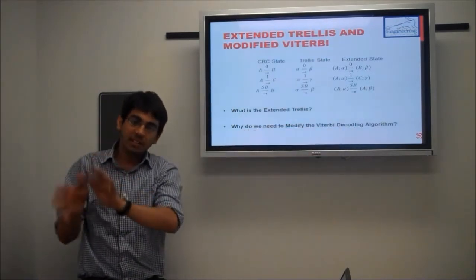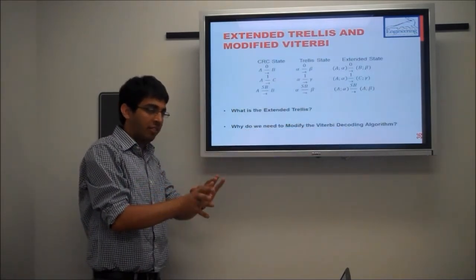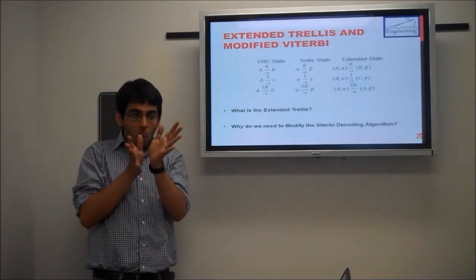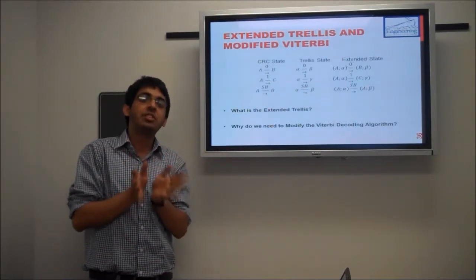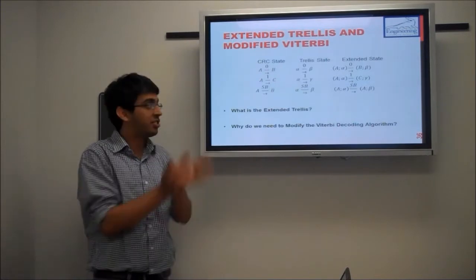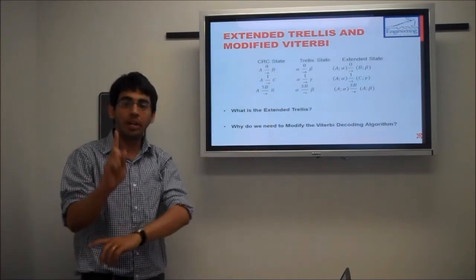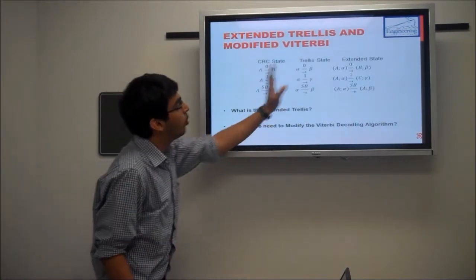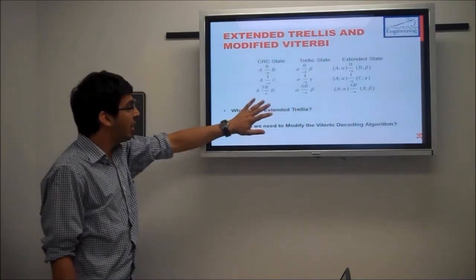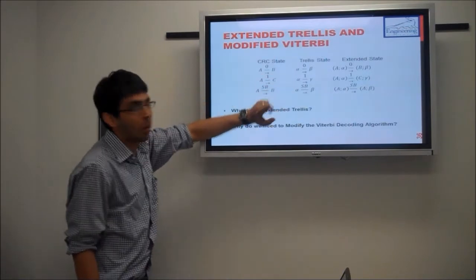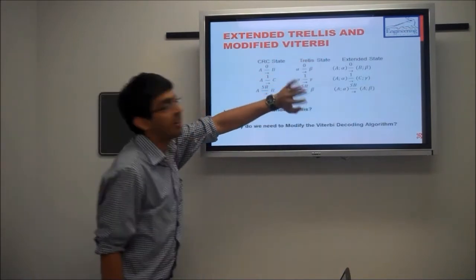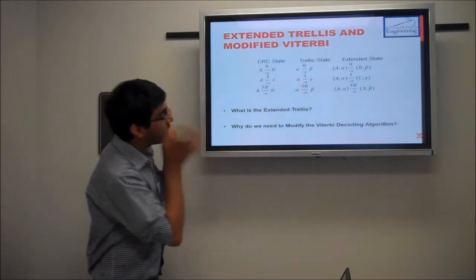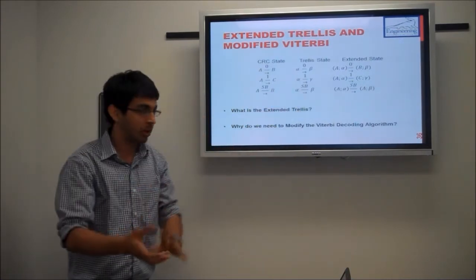Basically, whenever there is a stuffed bit received at the receiver, what the two-dimensional trellis does is whenever it's decoding the trellis diagram, it will stall the CRC cycle for one state, which corresponds to one stuffed bit, and then it keeps on moving the trellis state. So it will stop the CRC for one cycle and then move the trellis state for that particular cycle where we have the stuffed bit. This is how the concept of extended trellis works.